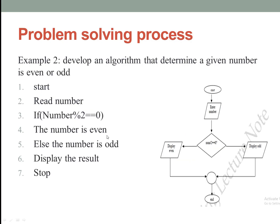This is an algorithm that determines whether a given number is even or odd. This is a condition: if the number modulus 2 is equal to 0 — meaning the remainder is 0 — then the number is even; otherwise the number is odd. Then display the result — even or odd. Stop or terminate the algorithm.